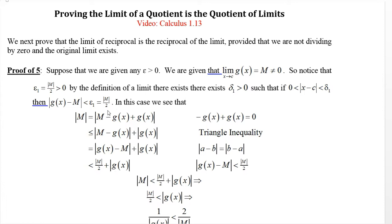Now if this is the case, we have |m| = |m - g(x) + g(x)|, which by the triangle inequality is less than or equal to |m - g(x)| + |g(x)|. Now |m - g(x)| is the same as |g(x) - m|, since |a - b| = |b - a|.